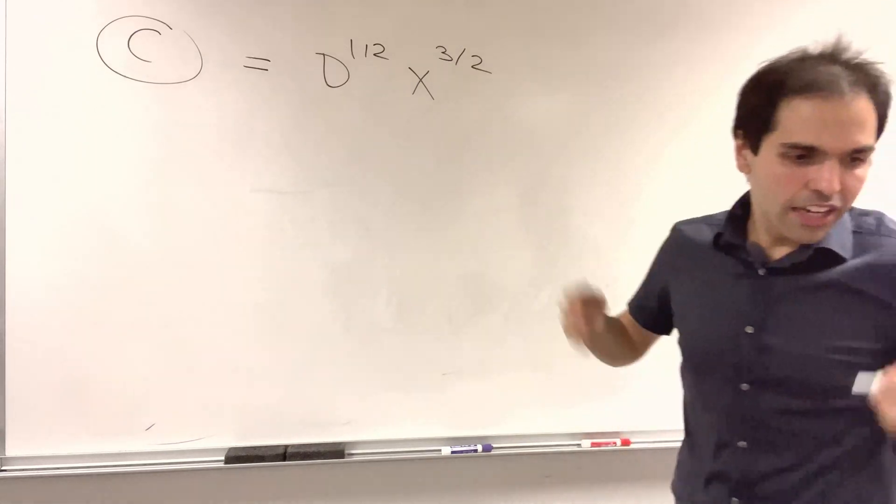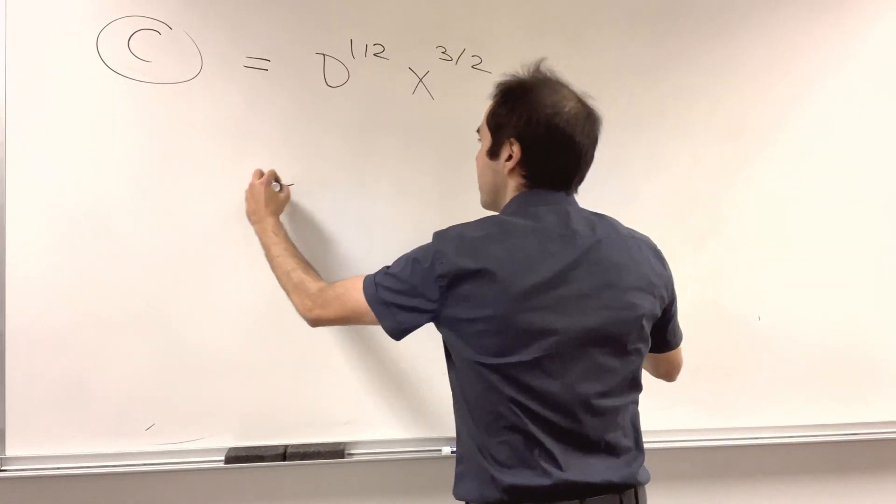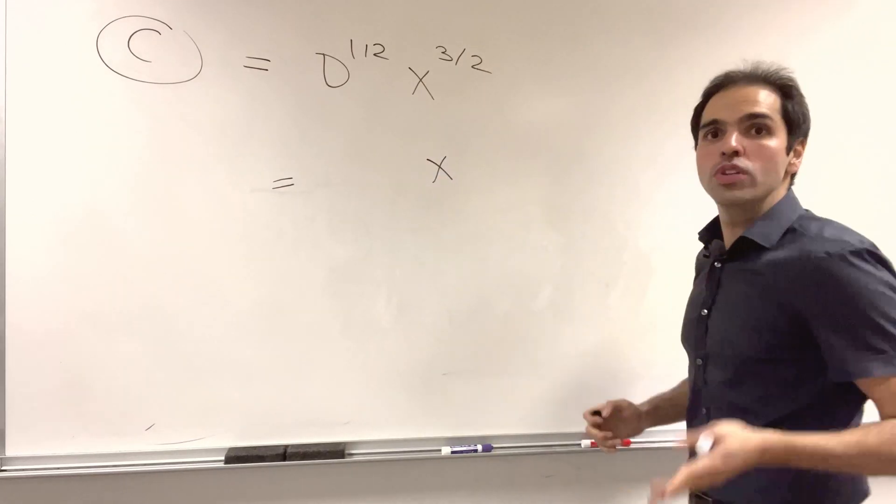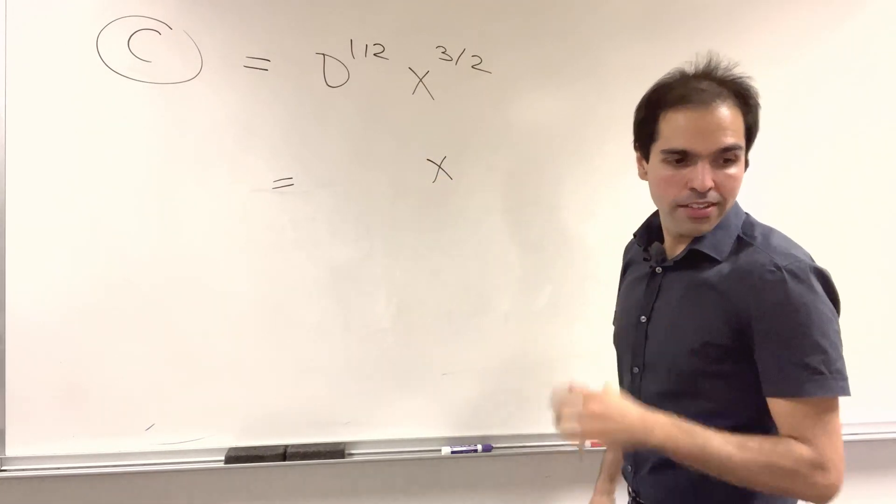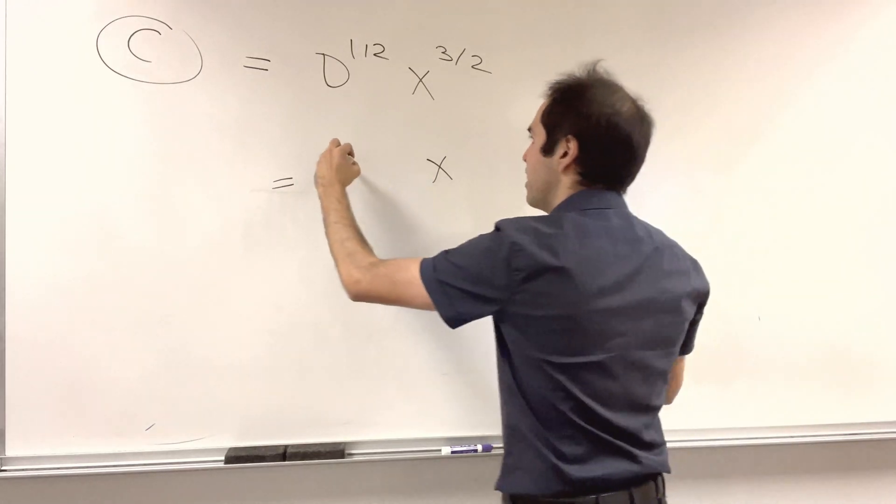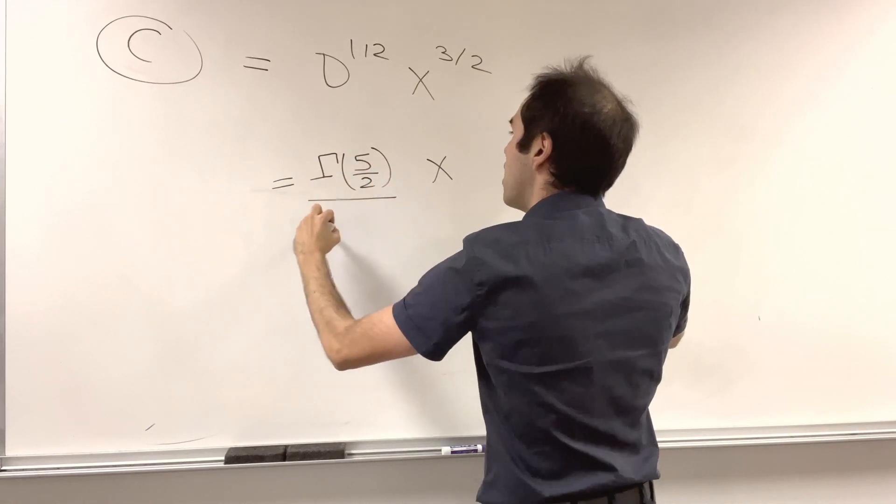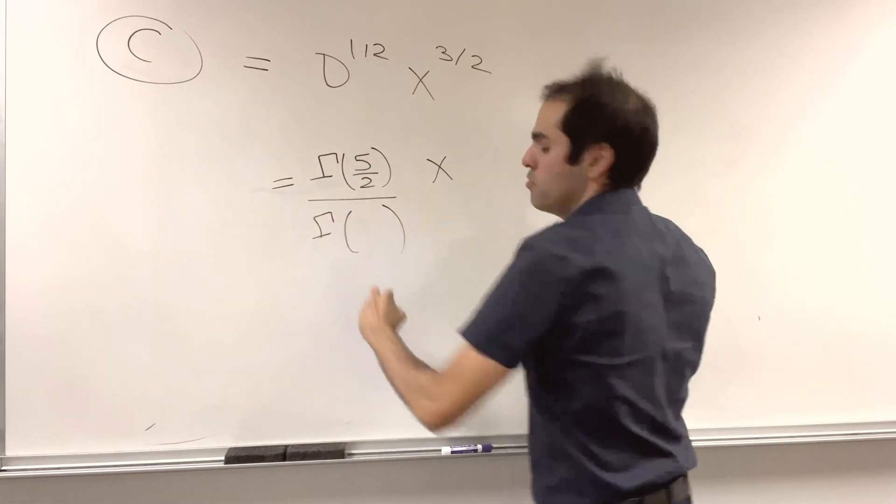So half derivative of x to the 3/2. All right, again, same thing, half of power comes down, so x to the 3/2 minus 1/2 is x to the 1, or just x. And then you just get, so you add 1 to that power gamma of 5/2. And let me see, it's a gamma of 2.